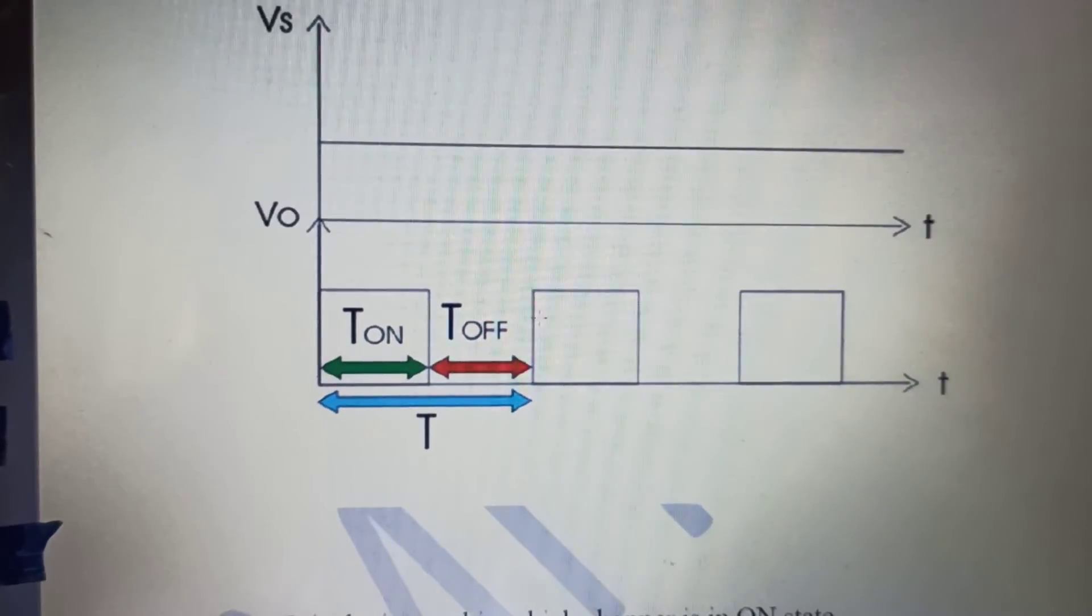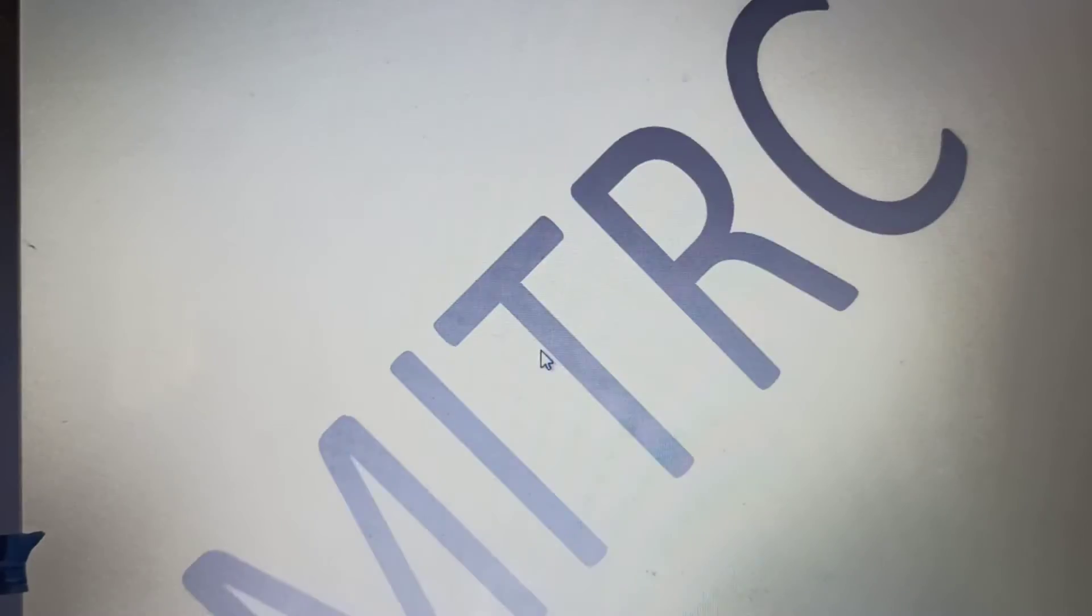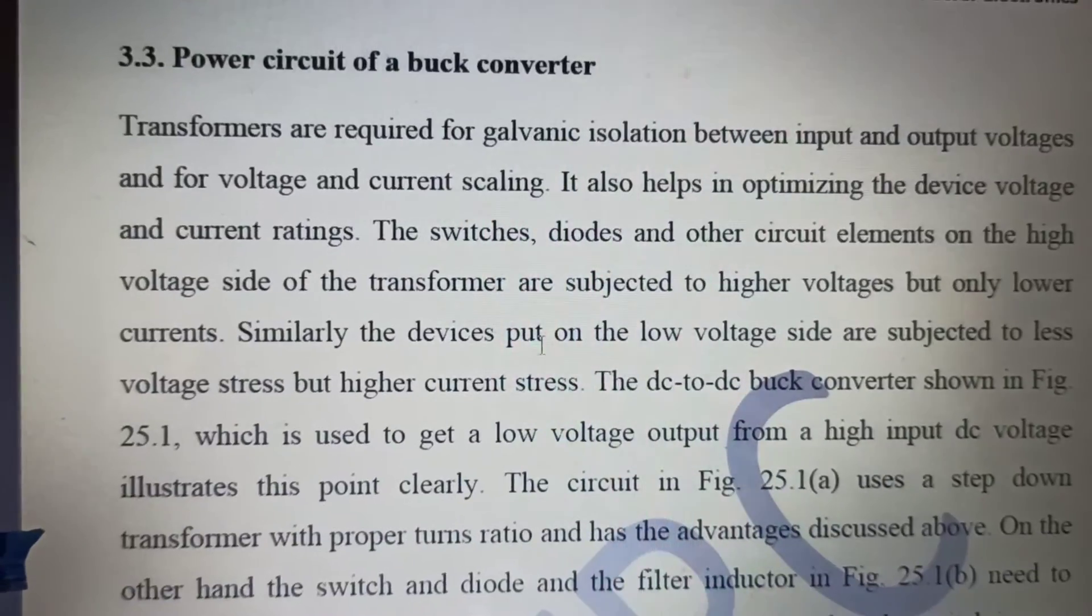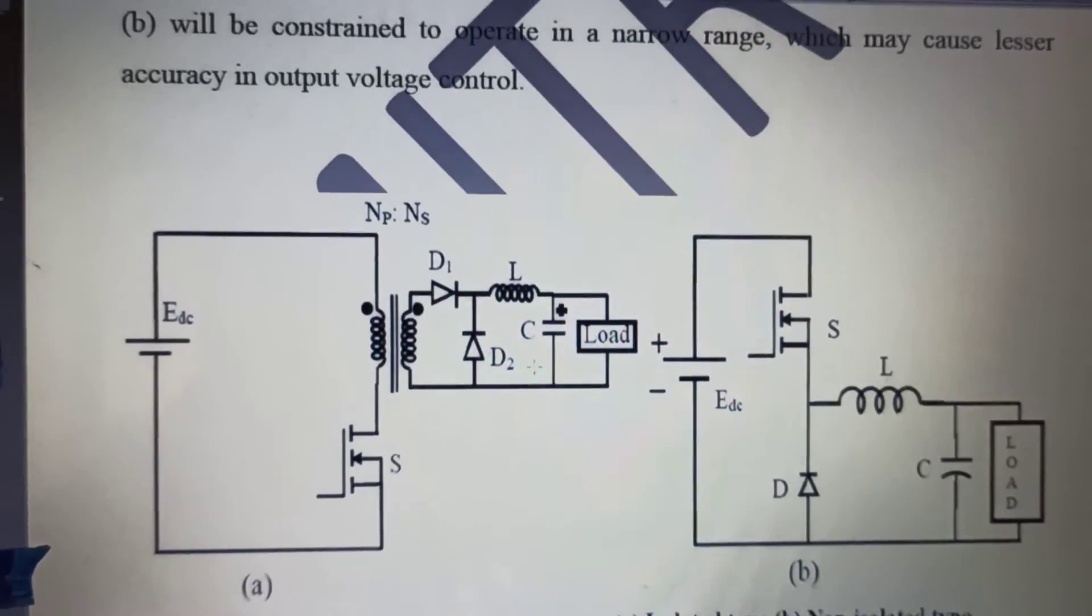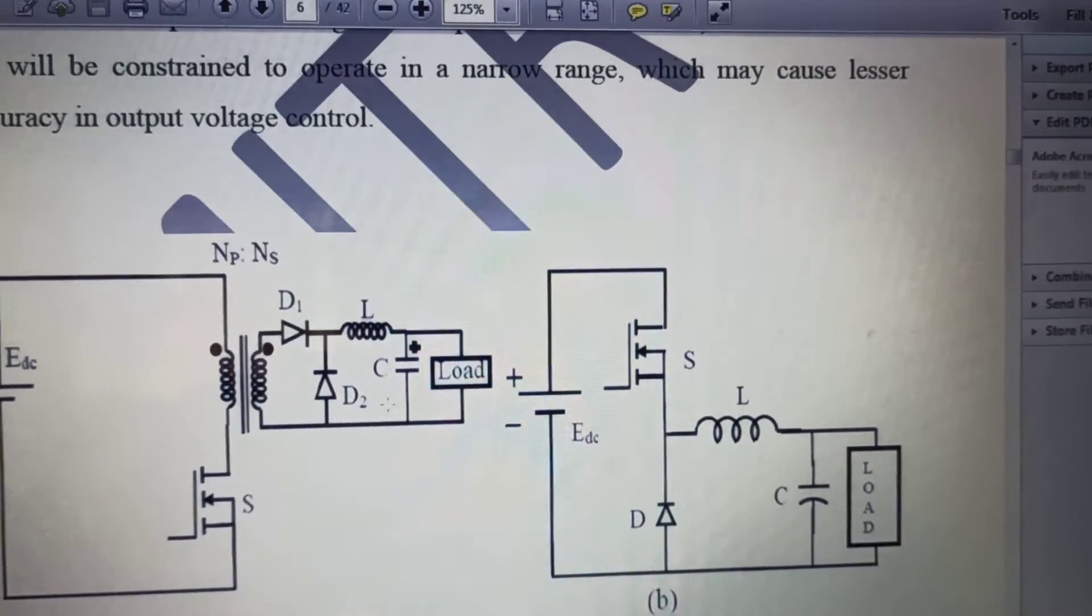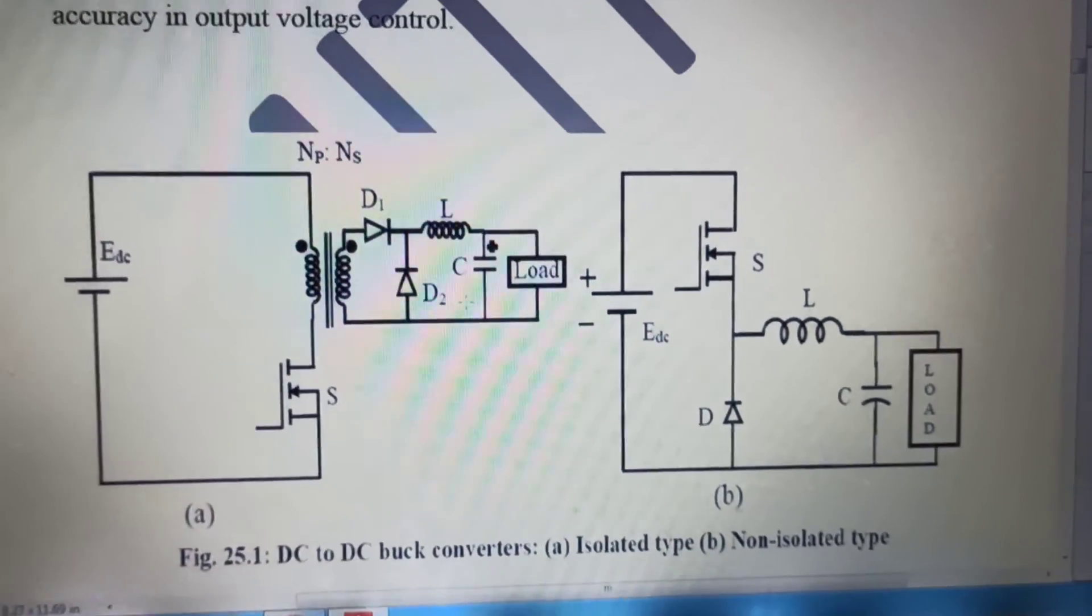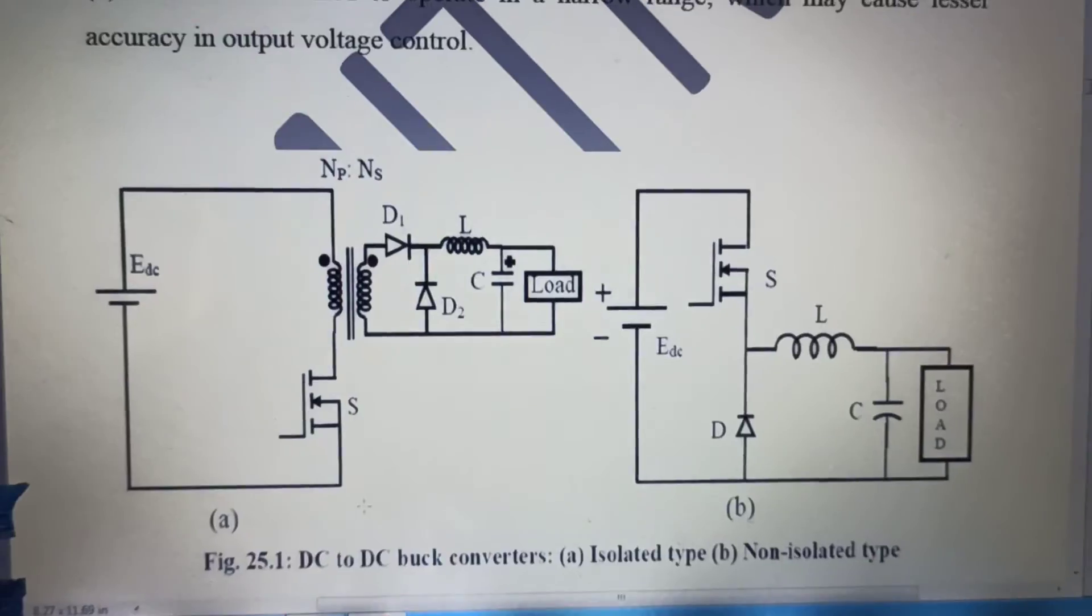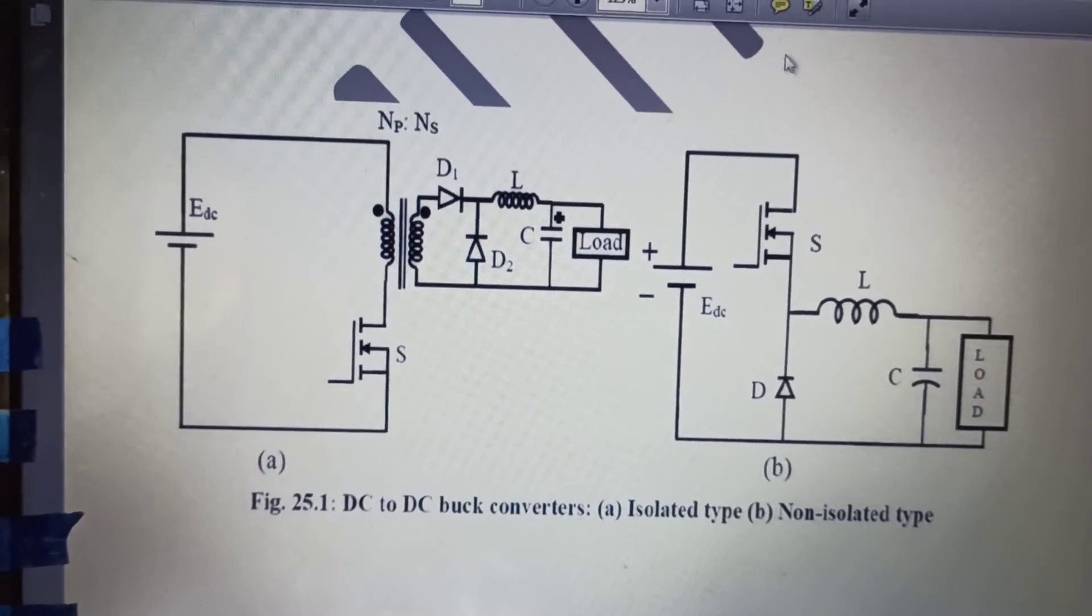Now turn on and turn off are quite clear. Vs is also quite clear. I will again discuss this power circuit because this power circuit is very important that I was discussing with you. This is the switch. Two types of DC to DC buck converter are shown here.